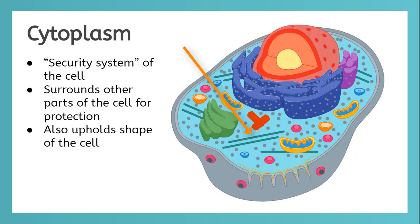This is called cytoplasm. Every type of cell has cytoplasm. The cytoplasm acts as the security system of the cell, surrounding and holding the other organelles in place. It pushes out on the cell membrane so that the cell can keep its shape.